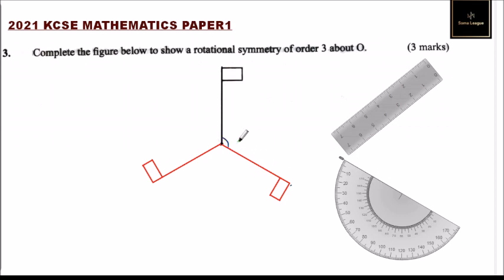Use your ruler to draw a figure exactly the same as this one in black. So this is the figure that I have drawn. Again, measure an angle of 120 using the protractor.